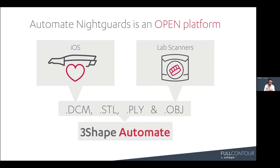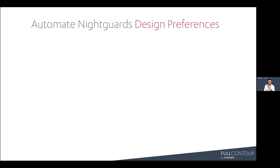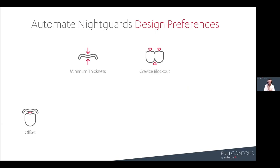Your files need to be in occlusion — we'll talk about that. You upload them to Automate and you get your design. On the Automate homepage upload page for Nightguards, there are four parameters, and we're going to do a deep dive into these four parameters because they're really important in controlling the fit of your design.